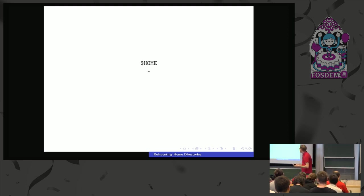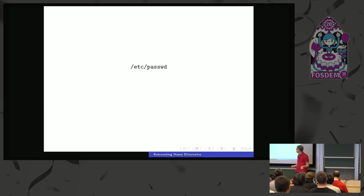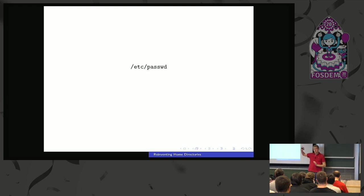What I'm going to talk about is $HOME — or tilde, as you can call it more briefly. What is actually $HOME? $HOME is obviously a directory, as you know, but it's more than that. For something to be a home directory, you also need a matching entry in /etc/passwd and /etc/shadow and these kinds of things. So currently it's two things: a user account in /etc/passwd, and an actual home directory in /home.